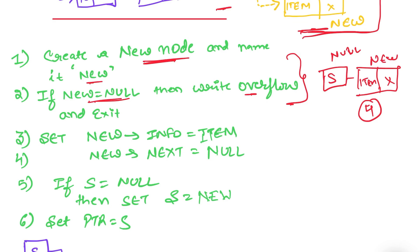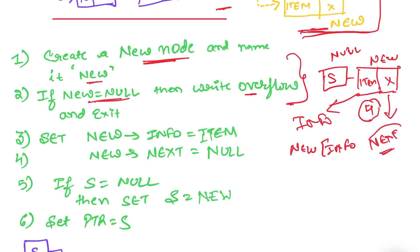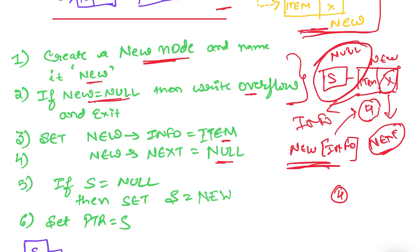After checking this, our next step is: set new info equal to item. Each node has one info part and one part containing the address of the next node, which we denote by 'next'. So we set new info equal to item, and new next equal to null, because there is no successor node. Now the address — let's say 4 — I need to put it in 's'.